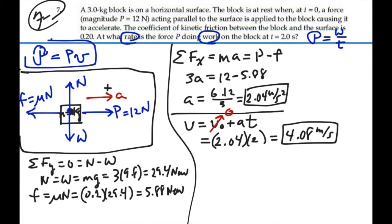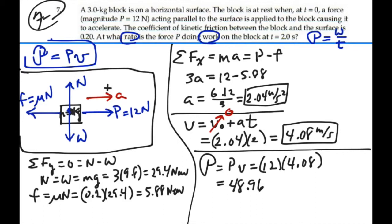Hence, at that moment at t equal to 2 seconds, our power will equal force p times the velocity, 12 newtons times 4.08 meters per second. So this is going to be 48.96 joules per second, or watts. Or we can just round that to 49.0 watts.